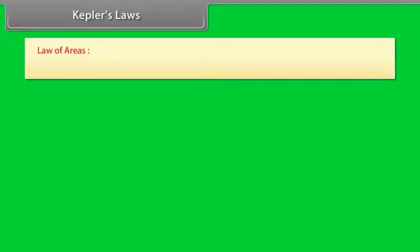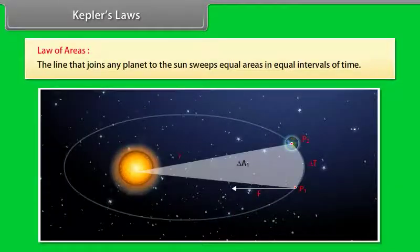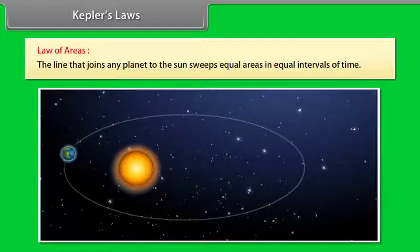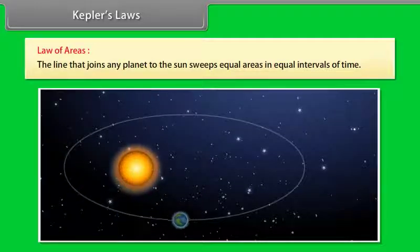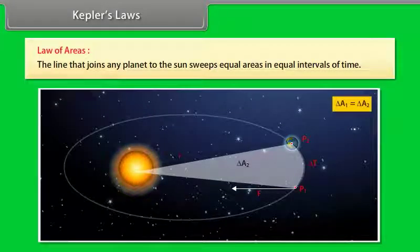Law of areas: the line that joins any planet to the sun sweeps equal areas in equal intervals of time. This law comes from the observation that planets appear to move slower when they are farther from the sun than when they are nearer.